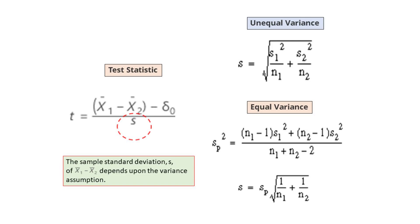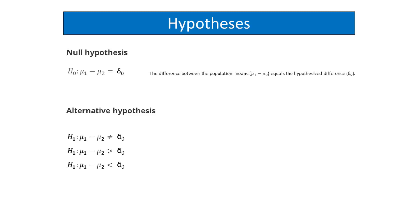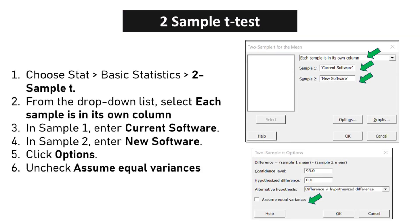Two-sample t-test. The test statistic for a two-sample t-test is calculated by taking the difference in the two-sample means and dividing it by either the pooled or unpooled estimated standard error. The null hypothesis is that there is no significant difference between the means of two independent groups, and the alternative hypothesis can be one-sided or two-sided. Choose Stat, Basic Statistics, Two-Sample T. From the drop-down list, select each sample is in its own column. In Sample 1, enter current software. In Sample 2, enter new software. Click Options.